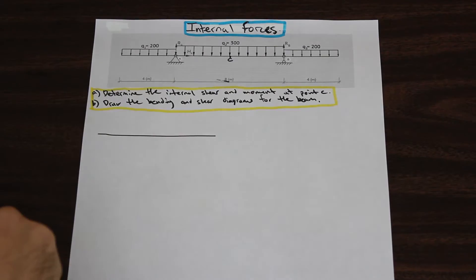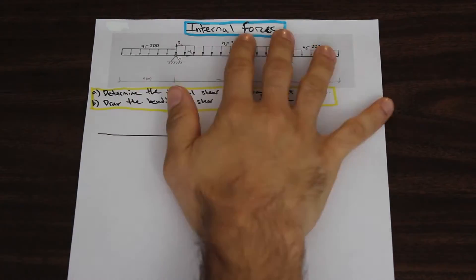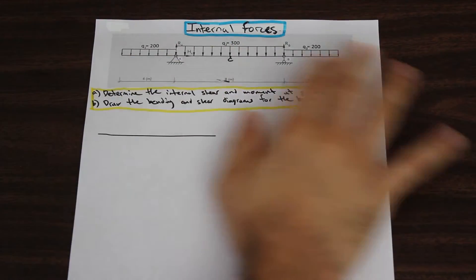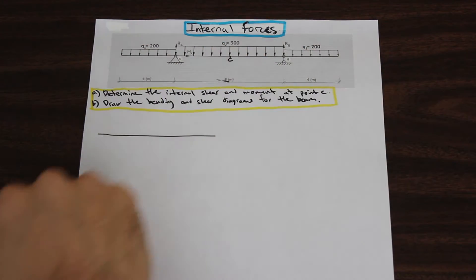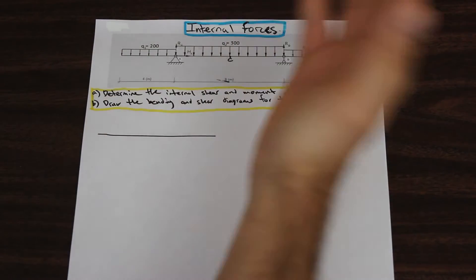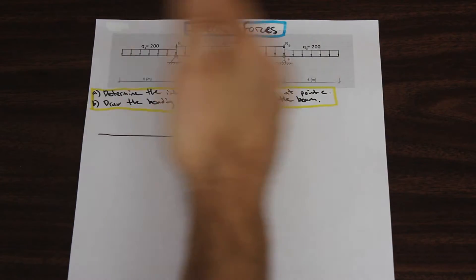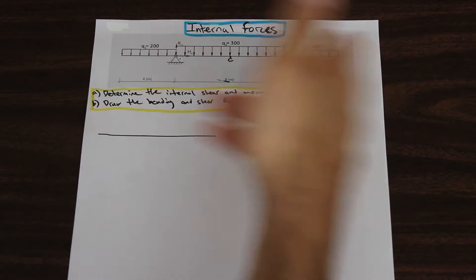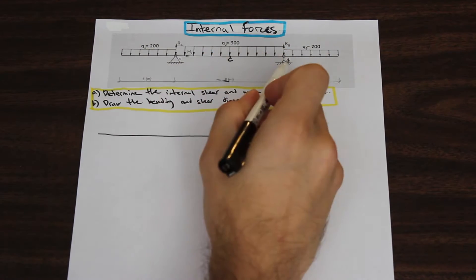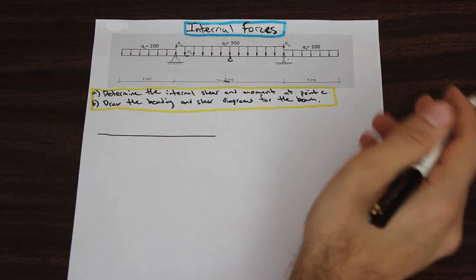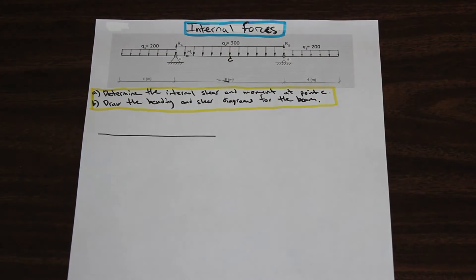Let's take a look at question A. We are dealing with internal forces. We have a beam made up of three different distributed loads: Q1, Q2, and Q3. The entire length of the beam is 8 plus 4 plus 4, so we have 16 meters. It asks us to determine the internal shear and moment at point C, which is right in the center, between points A and B.